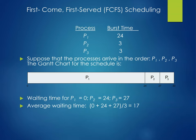Suppose the processes arrive in the order P1, P2, and P3. The Gantt chart for the schedule shows P1 runs for 24 seconds, P2 starts at 24 and goes for 3 seconds, and P3 ends at 30 seconds. The waiting time for P1 is 0, for P2 it's 24, and for P3 it's 27. So the average waiting time is (0 + 24 + 27) / 3 = 17 milliseconds.